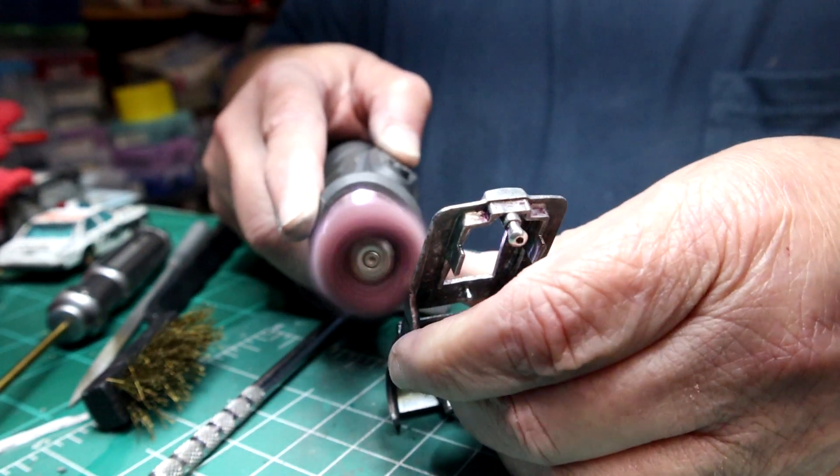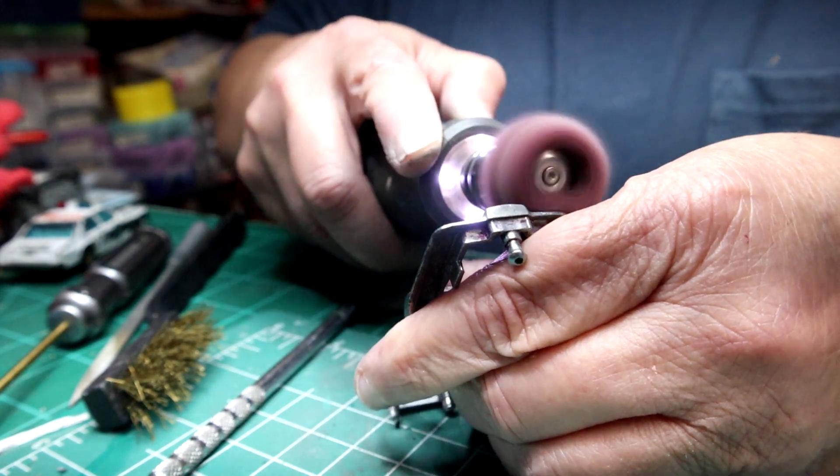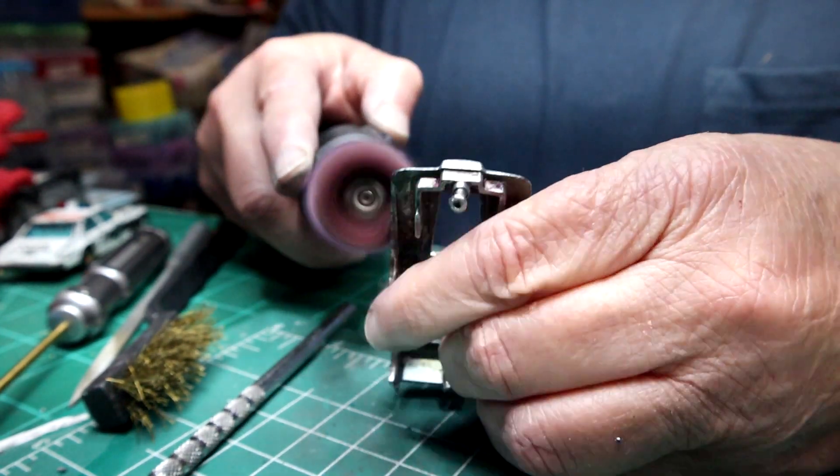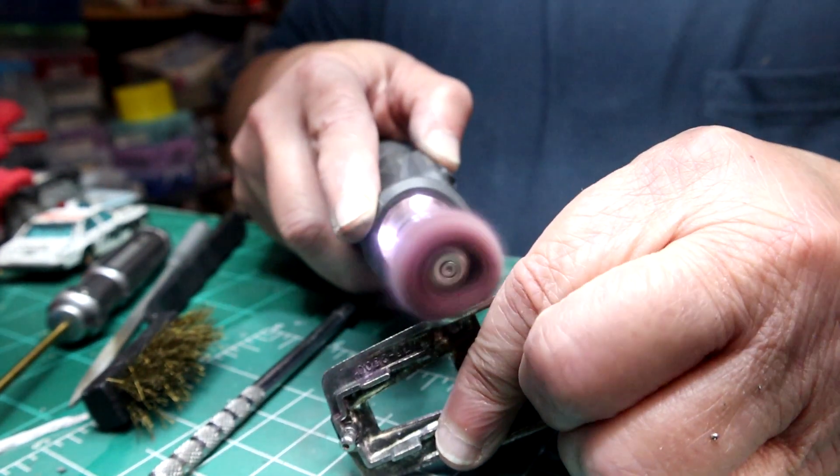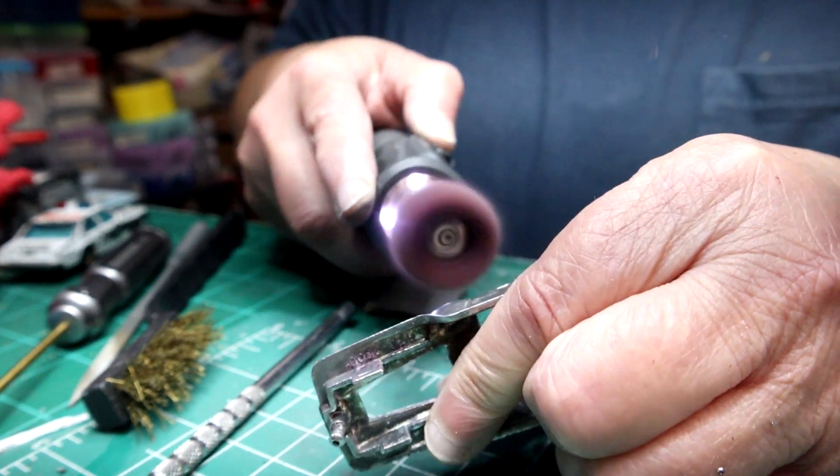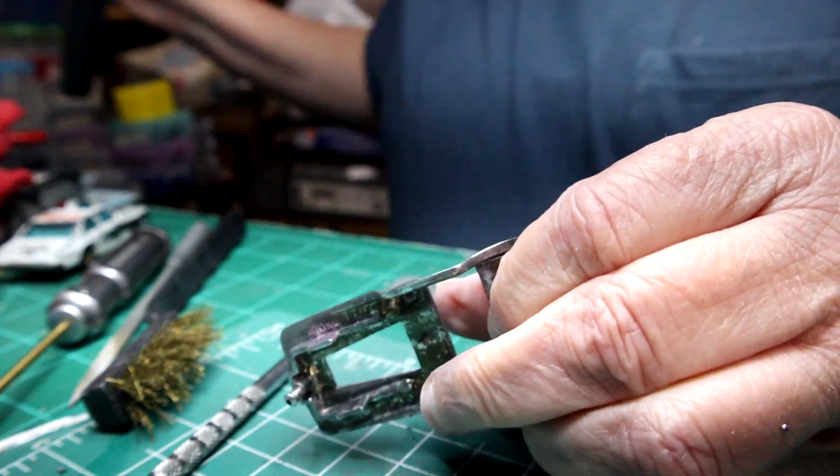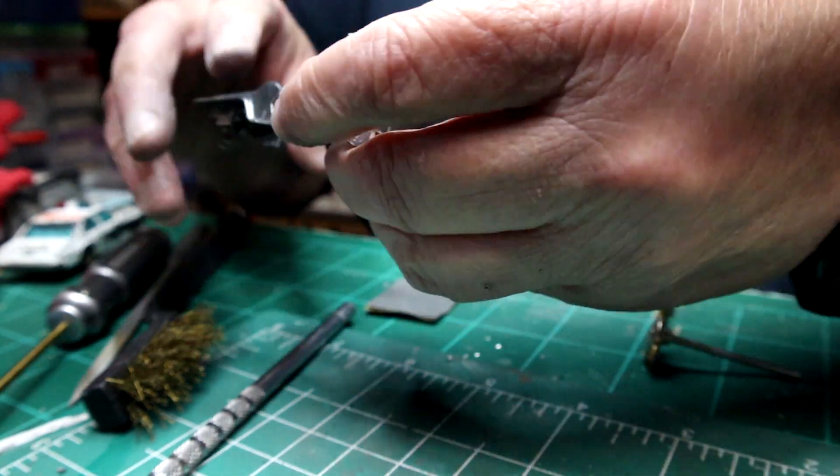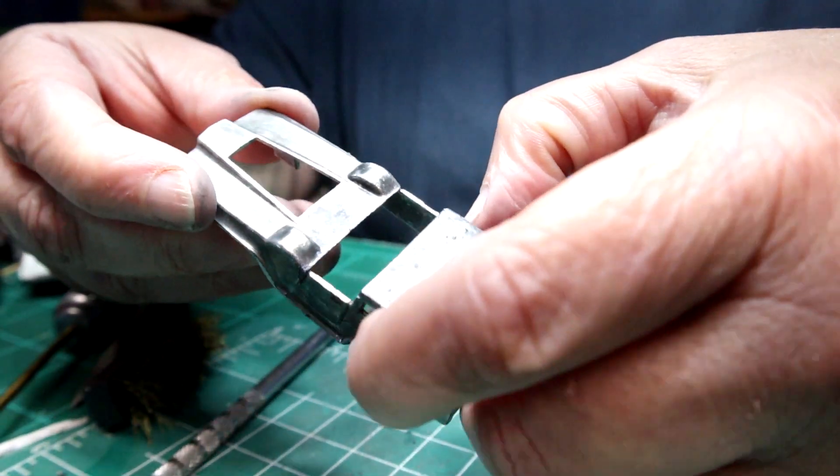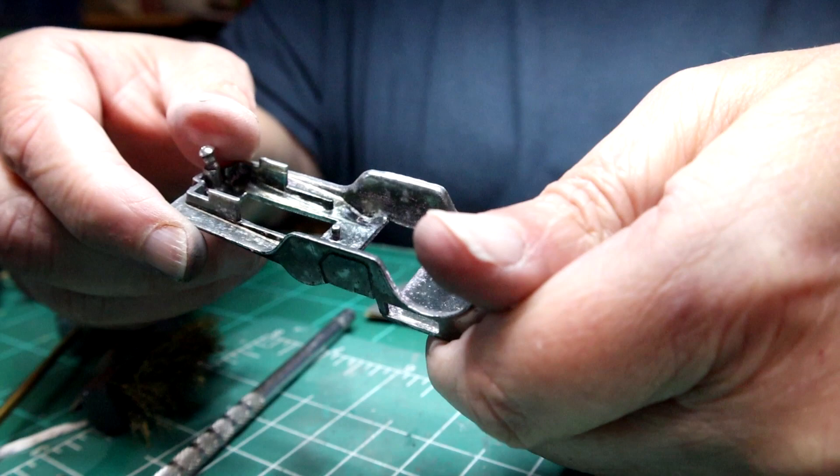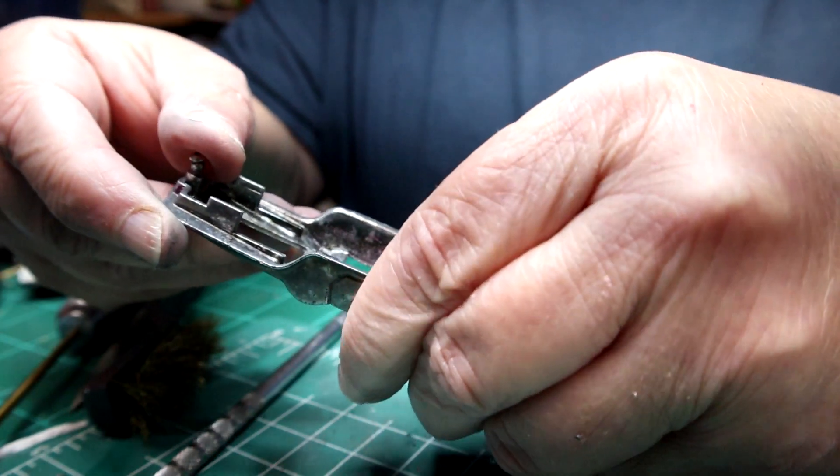As you can see, I'm going over it with the Scotch-Brite. This is the 320 grit, the maroon color one. I'm getting it ready because I'm probably going to have to get some zinc on it. I'm going to make it nice and clean.